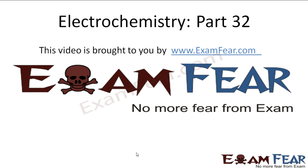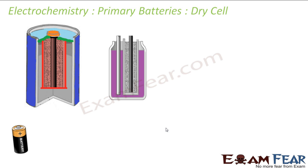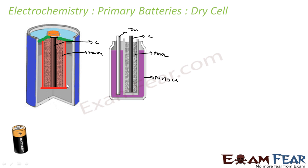This video on electrochemistry part 32 is brought to you by examfear.com. The dry cell, which we use in our daily life, has a mechanism almost similar to the Leclanché cell, but it is more compact. The Leclanché cell had MnO2, carbon, zinc, and NH4Cl. The dry cell has the same components: MnO2, carbon, and NH4Cl paste forms the body, with the whole body made of zinc.